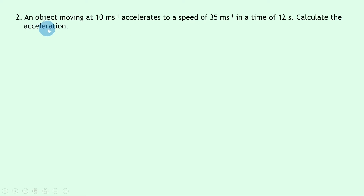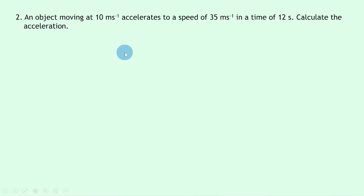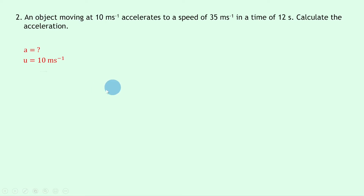Question two says an object moving at 10 meters per second accelerates to a speed of 35 meters per second in a time of 12 seconds. Calculate the acceleration. Writing down what we know: we're trying to find acceleration a, the initial velocity u is 10 meters per second, the final velocity v is 35 meters per second, and the time is 12 seconds.